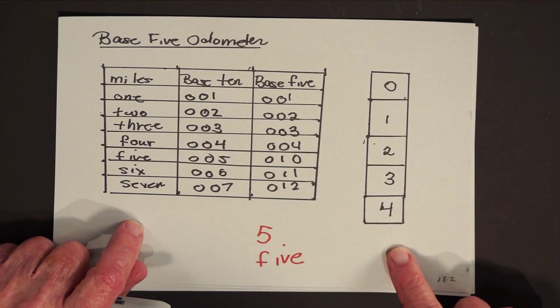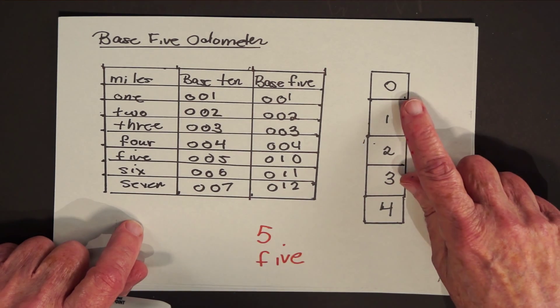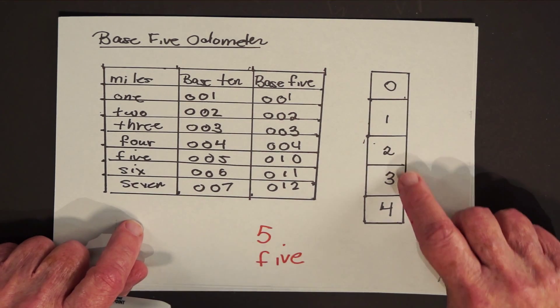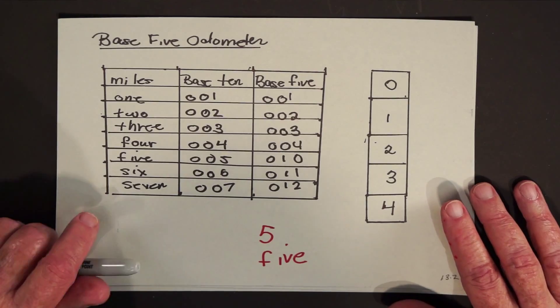And as a result all you're ever going to see in base 5 arithmetic are the digits zero, one, two, three, and four. And the people who live in that system will still know what the numbers five, six, seven, eight, and nine are.